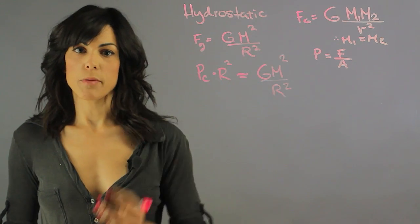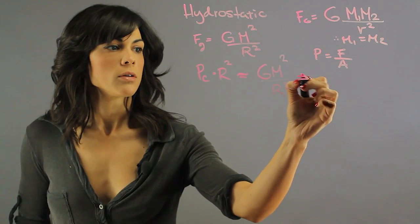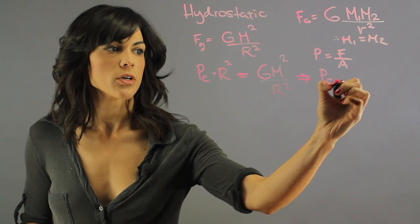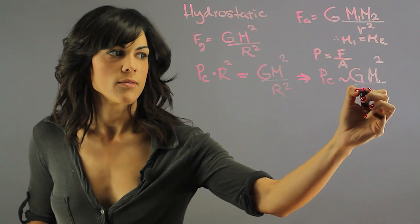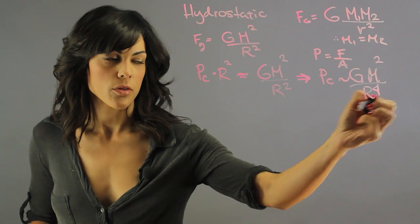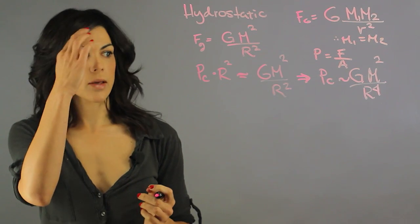So if we solve for the pressure, we have our central pressure here. It's about G m square divided by the radius to the fourth.